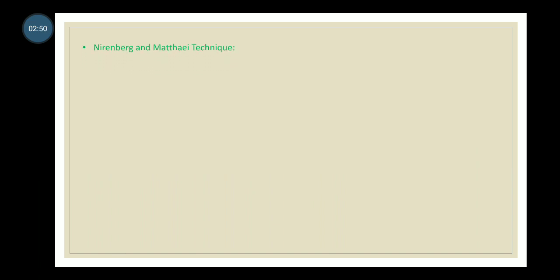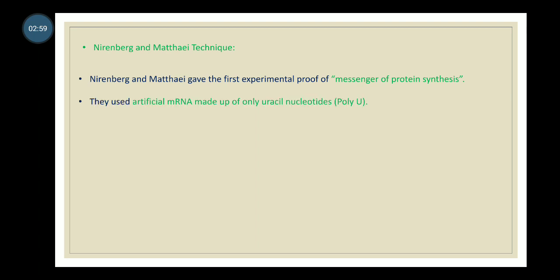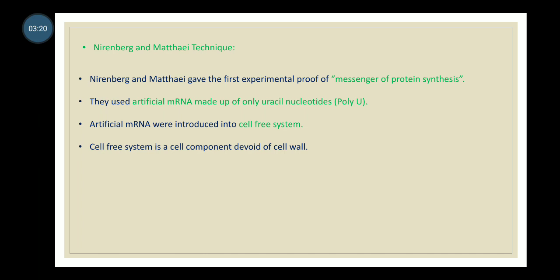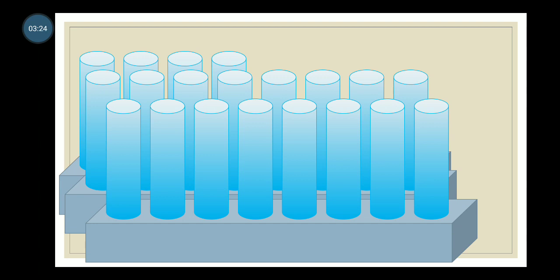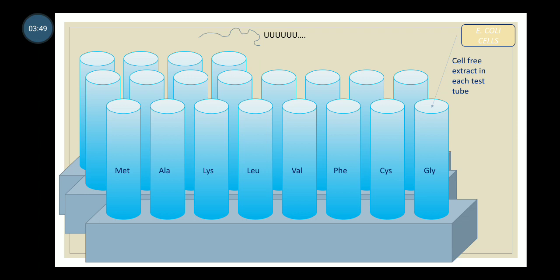Next, Nirenberg and Matthaei provided the first experimental proof of the messenger of protein synthesis. They used artificial mRNA made up of only uracil — a poly-U polynucleotide chain. This artificial mRNA was introduced into a cell-free system, which is a cell component devoid of cell wall. The experiment used 20 different test tubes, each containing cell-free extract of E. coli, 20 different amino acids, and the poly-U mRNA.